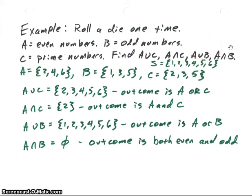The first thing you normally will want to do is to figure out what is your sample space. Our sample space for rolling a die one time is the numbers one through six, the integer numbers one through six. A is our even numbers, so they're going to be two, four, or six. B is our odd numbers, so one, three, five. And C is our prime numbers, so two, three, five.